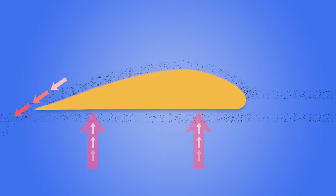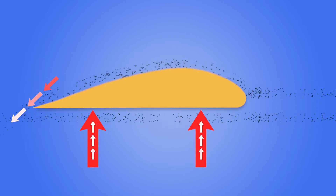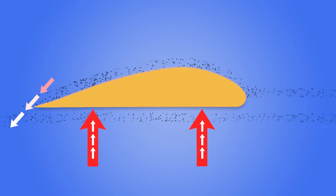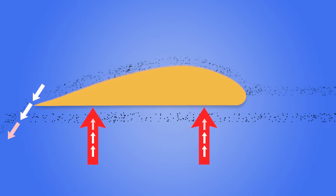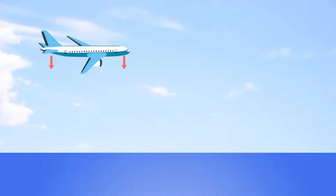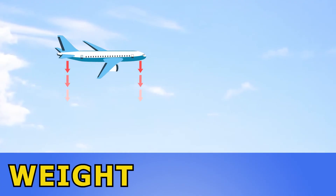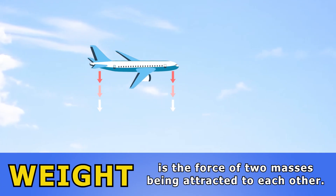Let's see how that works on real wings. The air on the wing's upper surface is curved so that the air rushing over the top of the wing speeds up, causing downward force, and that pushes the wing upward — and that's lift.